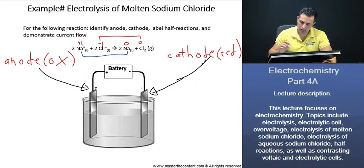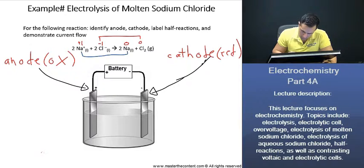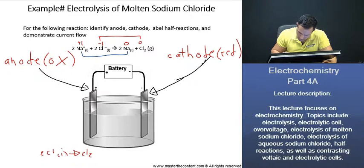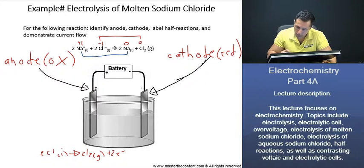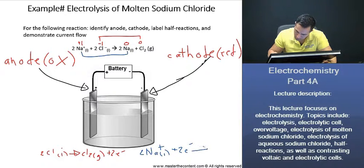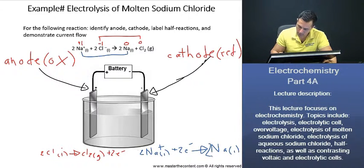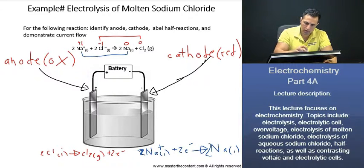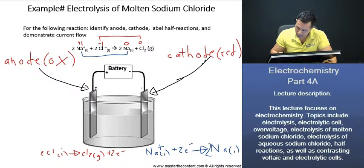Reduction occurs at the cathode, oxidation occurs at the anode. Let's go ahead and fill that in. We'll begin here with our oxidation reaction of our two chlorine ions. That's going to give us our chlorine gas plus our two electrons. Now for our reduction reaction here, we're going to have two of our sodium ions plus our two electrons, and that's going to give us liquid sodium metal.